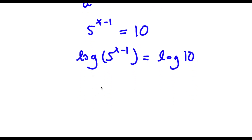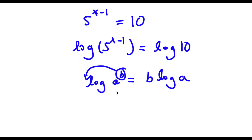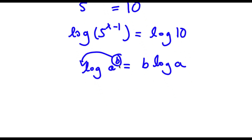Now, if I have something in the form log a to the power of b, I can actually move this exponent b to the front of the logarithm, so this equals b times log a. This property is really useful because b is an exponent, and solving for an exponent is actually really hard.